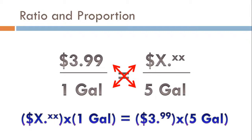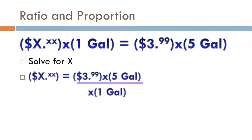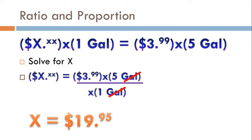To solve, divide both sides by one gallon. The gallons cancel out — you can cancel labels, not just numbers. That leaves X equals $3.99 times five, which gives $19.95. If you have a twenty-dollar bill in your pocket, you'll definitely be able to get your five gallons at this rate.